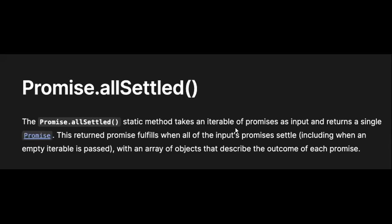In this section we will be talking about Promise.allSettled. The Promise.allSettled static method takes an iterable of promises as input and returns a single promise as output. This returned promise fulfills when all of the input promises settle, including when an empty iterable is passed.